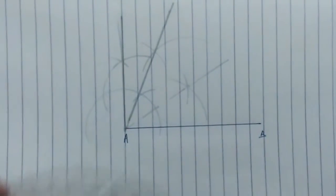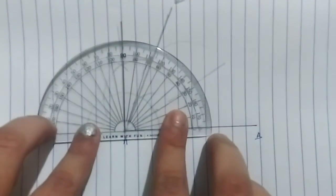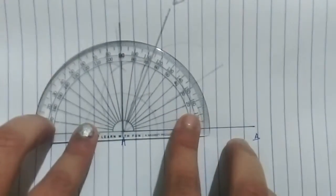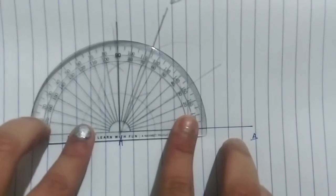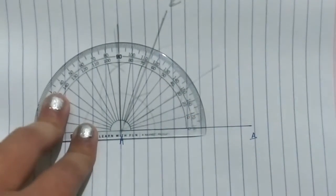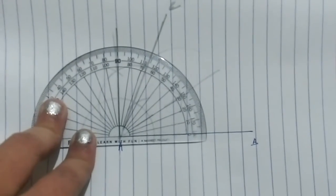We will name it as C, A, C and then when we see the angle, this is 66 degrees. Hence, the angle is 66 degrees. Thank you.